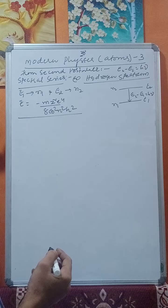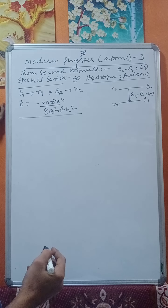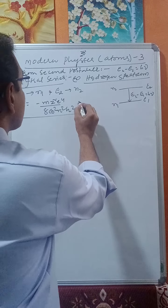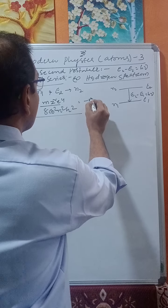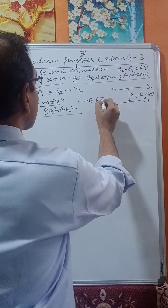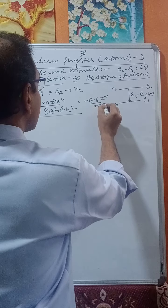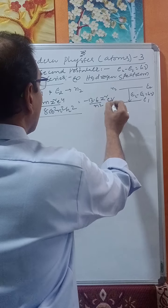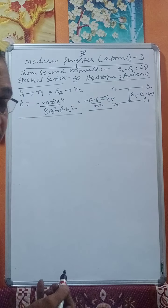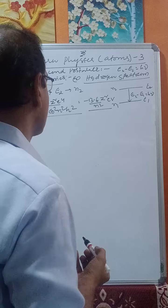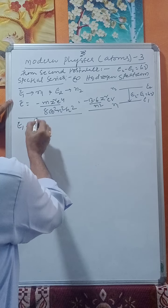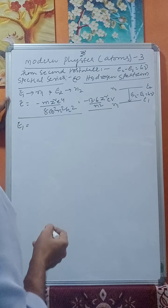We derived this in class 2. Energy E equals minus m·z²·e⁴ divided by 8·ε₀²·n²·h², which equals minus 13.6·z² divided by n² electron volts.